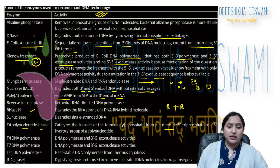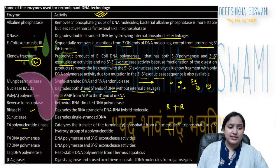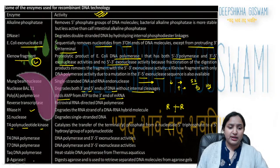T4 DNA polymerase has DNA polymerase and 3'→5' exonuclease activity. T7 DNA polymerase has the same scenario. Taq DNA polymerase is a heat-stable DNA polymerase from Thermus aquaticus.